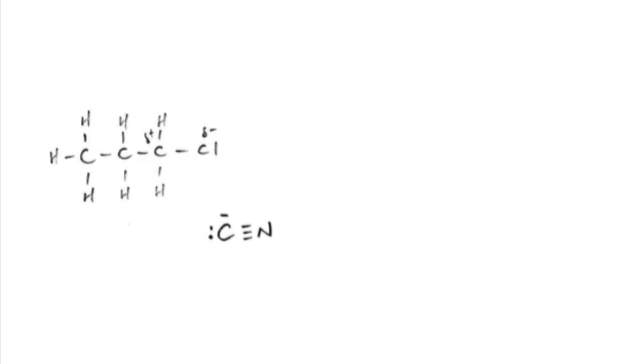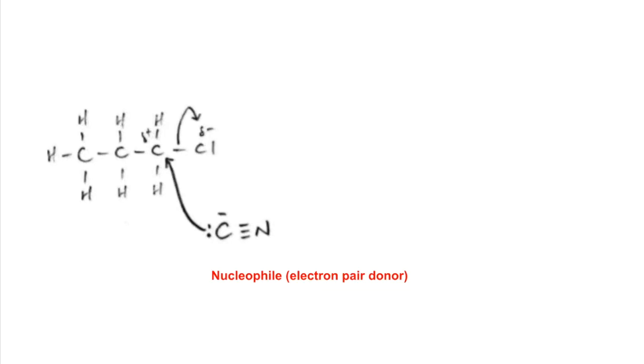The mechanism: the CN- ion can act as a nucleophile, electron pair donor. A pair of electrons from the carbon attracted to the slightly positive carbon in the C-Cl bond. The pair of electrons in the C-Cl bond are repelled onto the chlorine. That's going to give us a straightforward substitution.